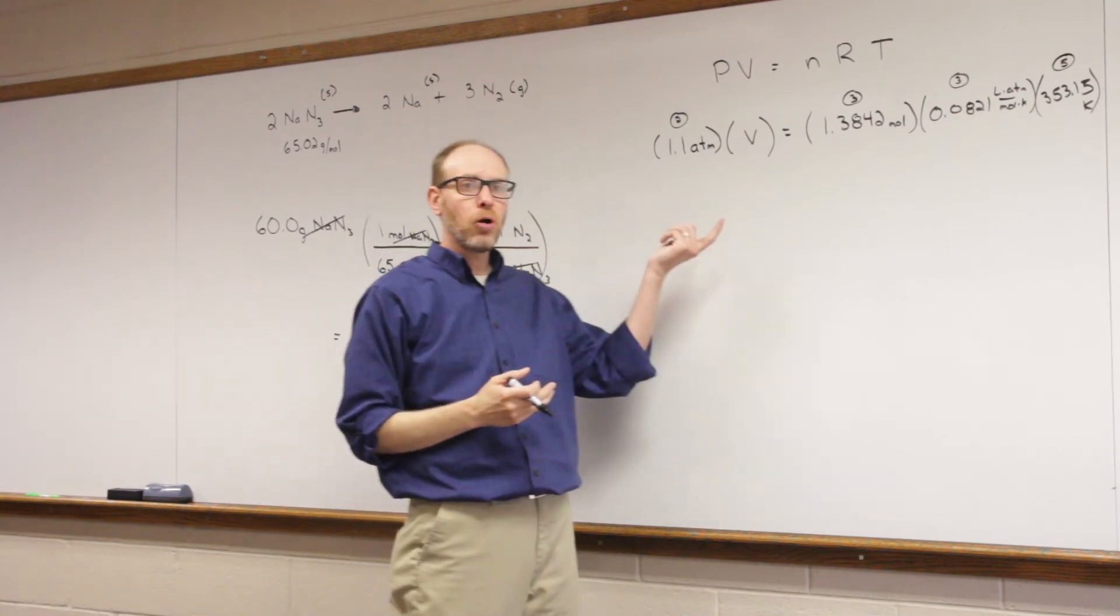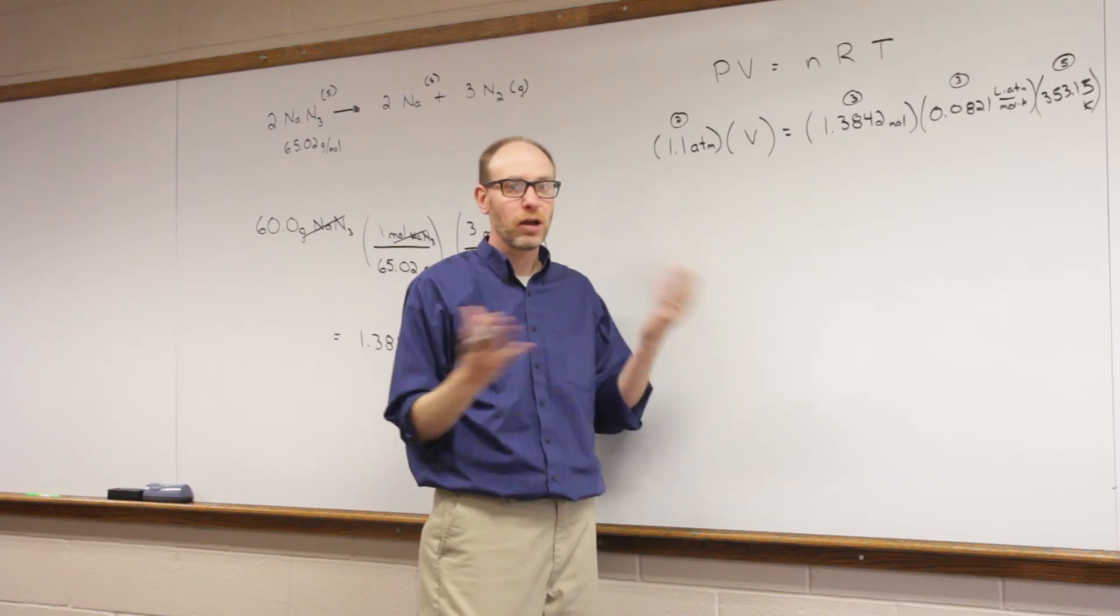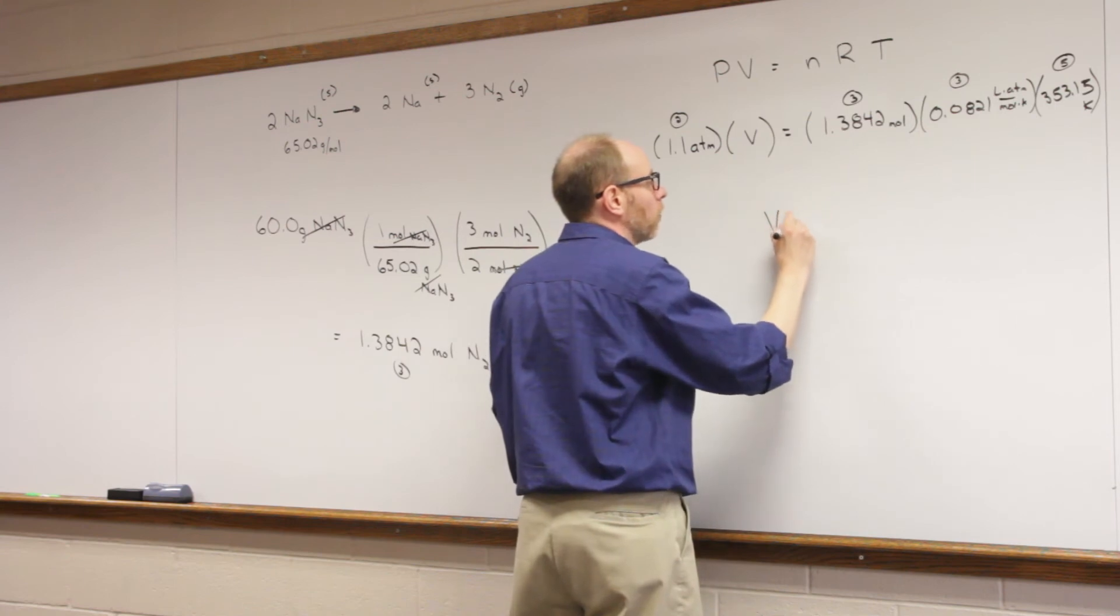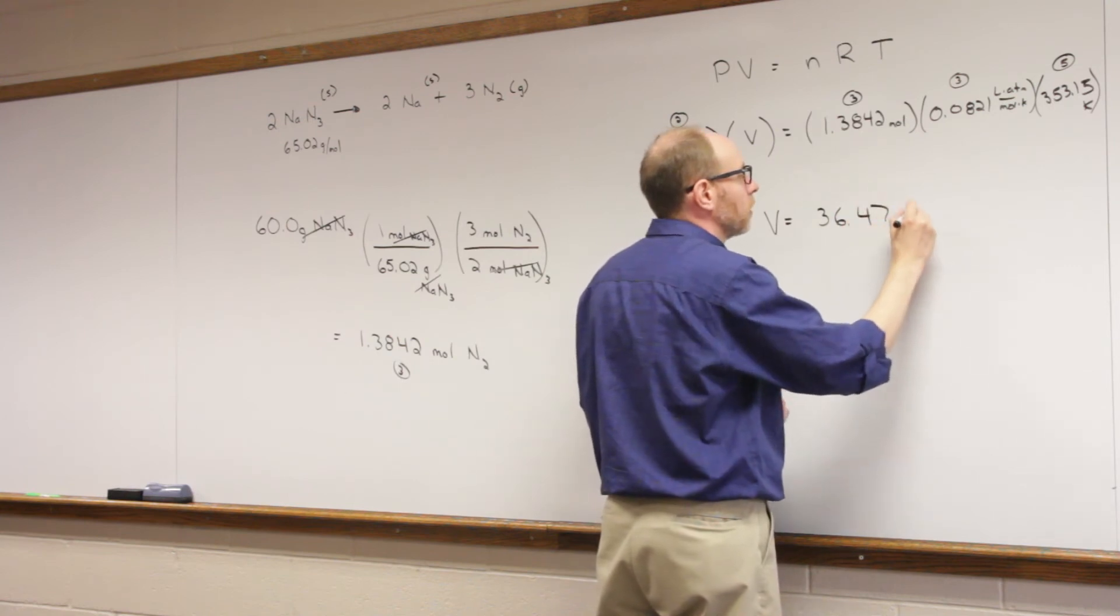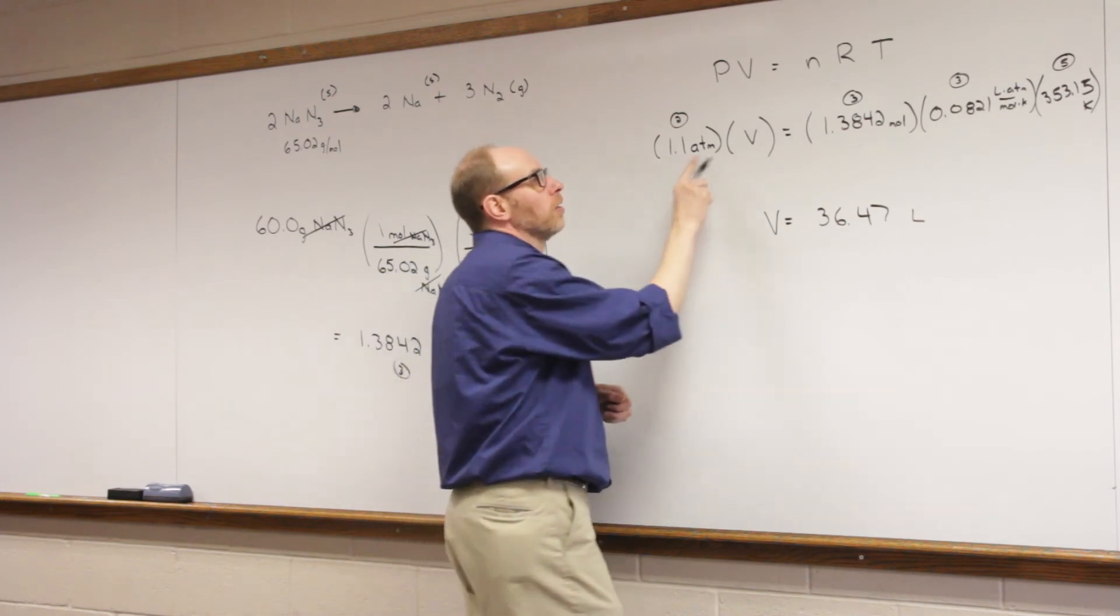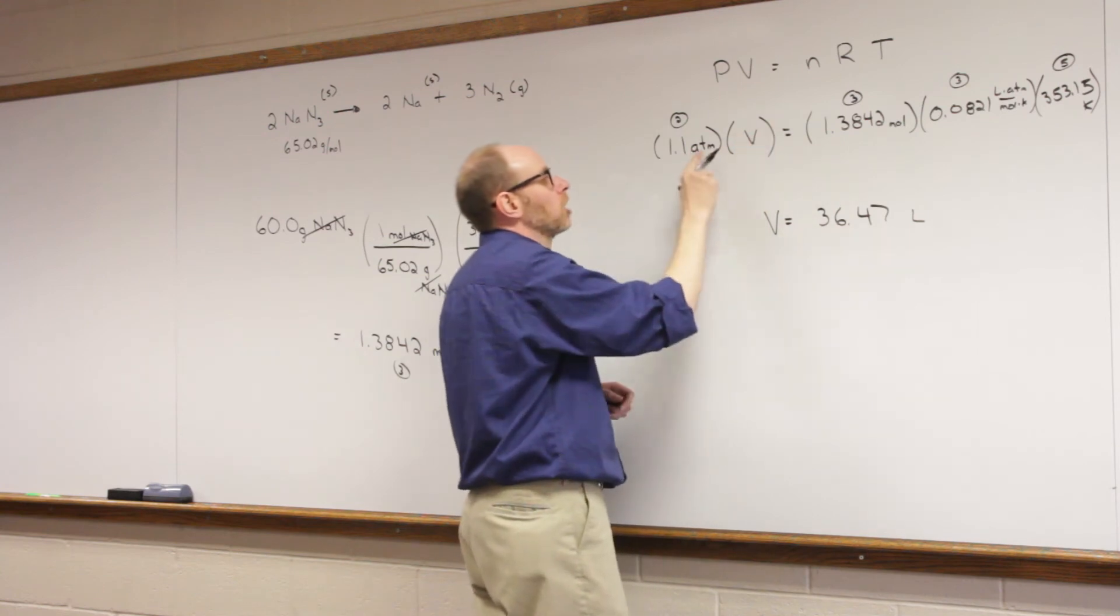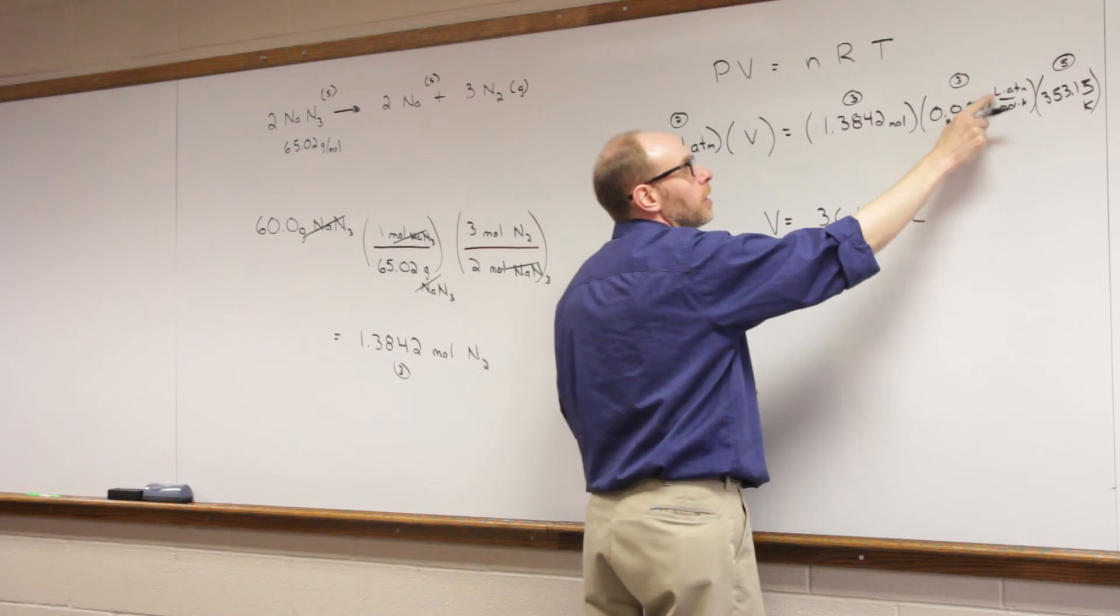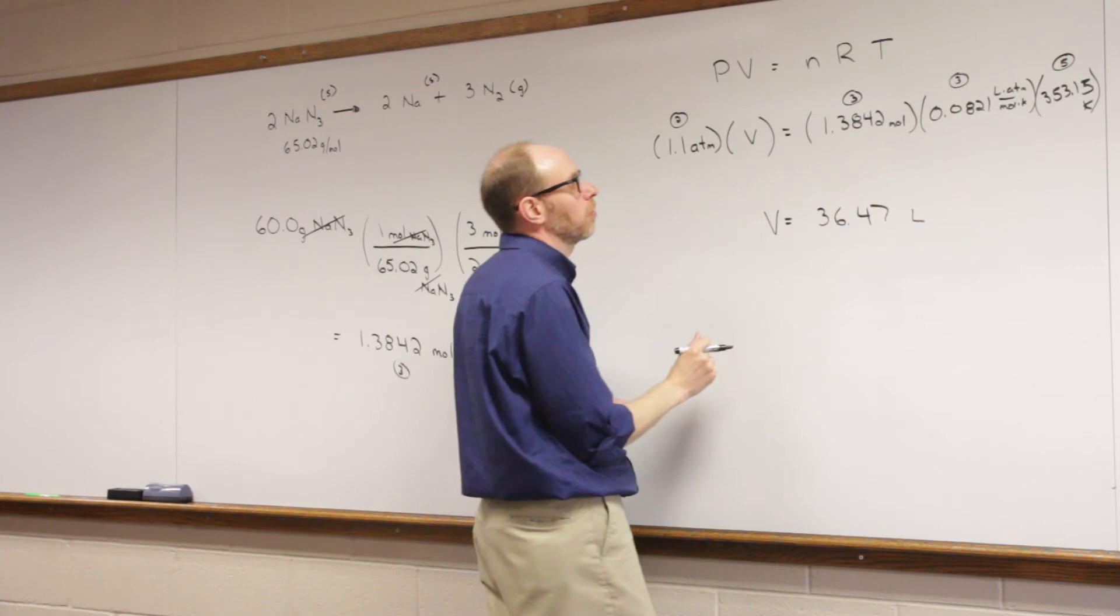It's all multiplication and division, so we should end up with two significant figures. I know that without doing any calculation. But when I punch this into my calculator, I get that volume to be 36.47 liters of gas that are produced. How do I know it's liters? Well, the ideal gas law is telling me that if I have my pressure in atmosphere, my temperature in kelvin, my amount in moles, then I should have a volume that would be liters.